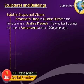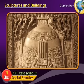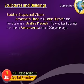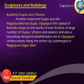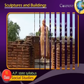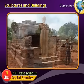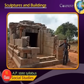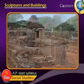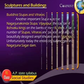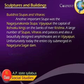Amaravati Stupa in Guntur district is the famous one in Andhra Pradesh. This was built during the rule of Satavahanas about 1900 years ago. Another important stupa was the Nagarjuna Konda Stupa in Vijayapuri, the capital of Ikshwaku kings on the bank of river Krishna. A large number of stupas, viharas, palaces and a beautifully designed amphitheater are in Vijayapuri. Unfortunately, today the entire city is submerged in Nagarjuna Sagar Dam.